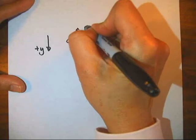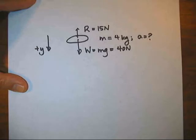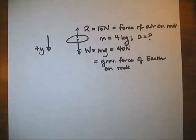The force of air resistance must reduce the overall acceleration of the rock. So the force of air resistance, 15 newtons, must point upward.